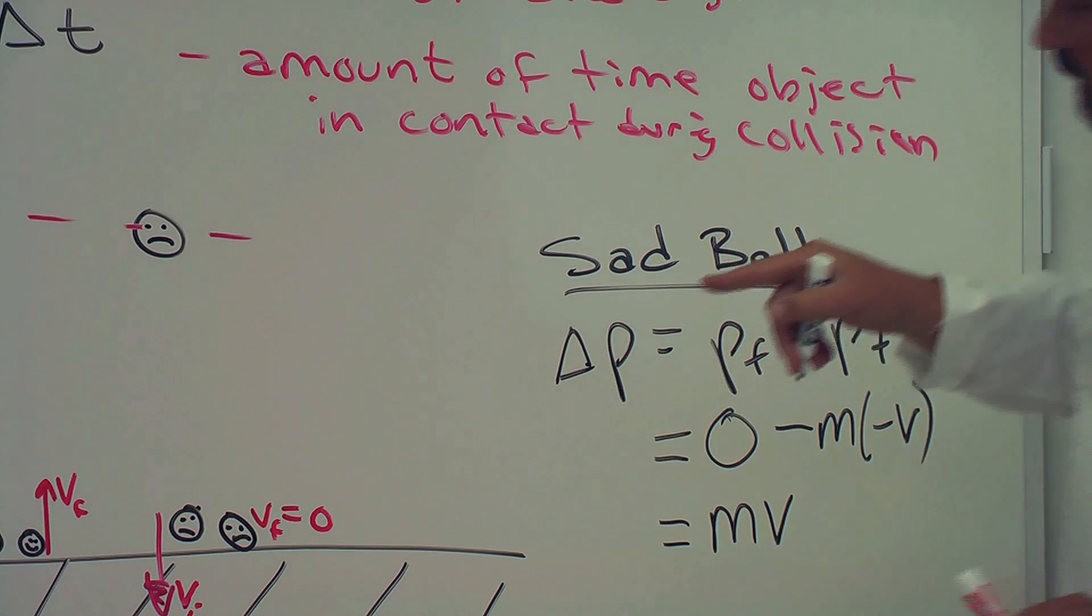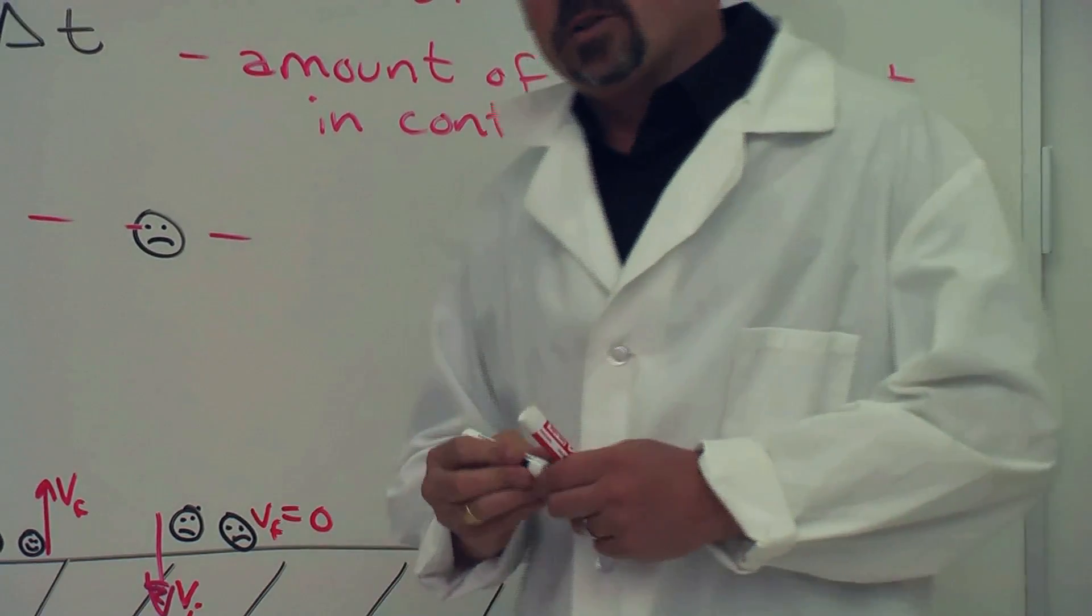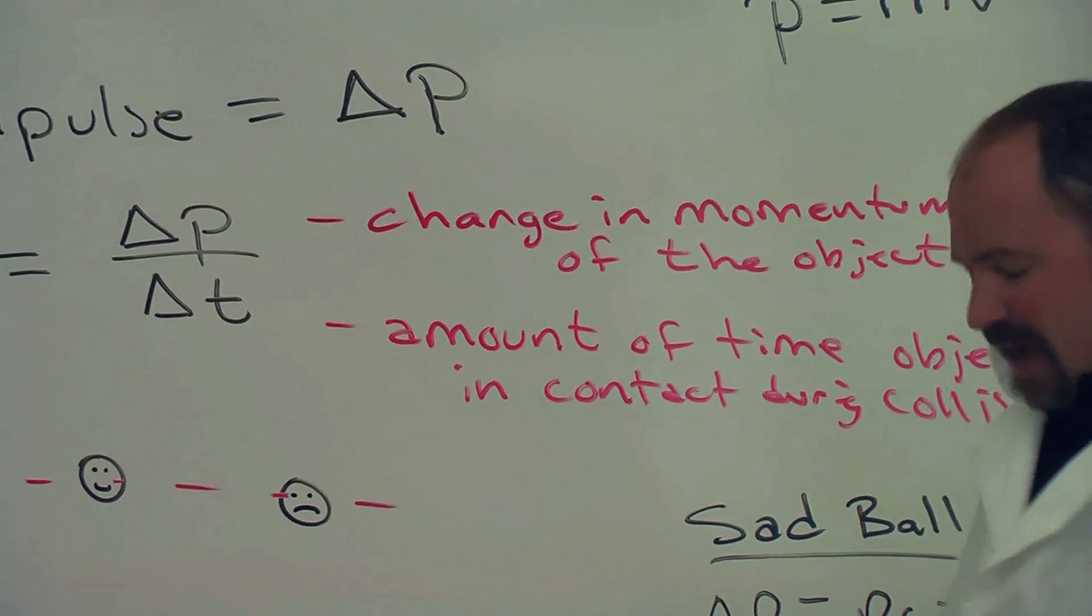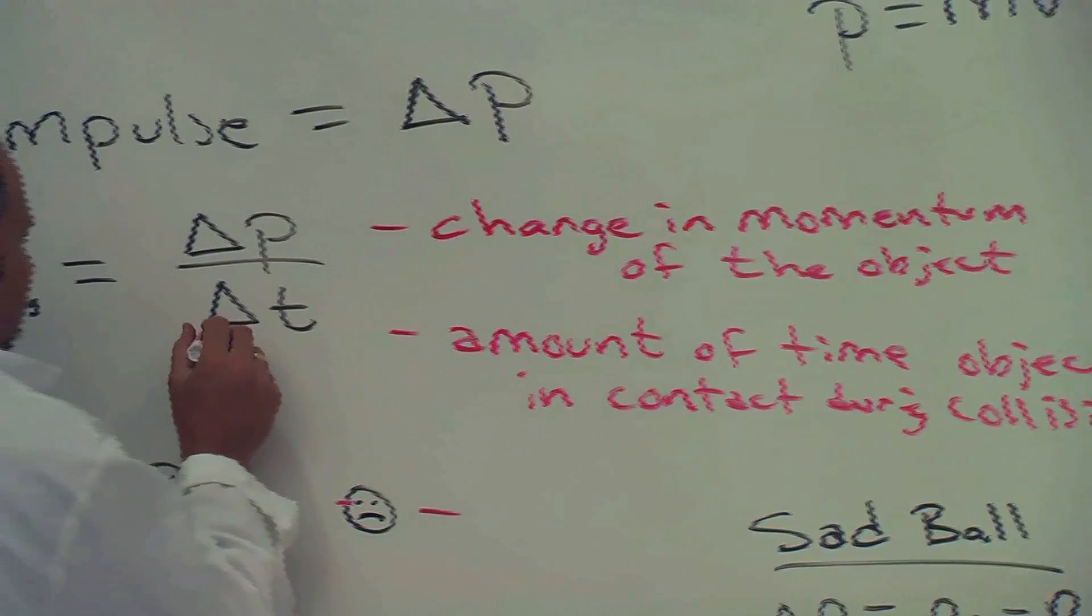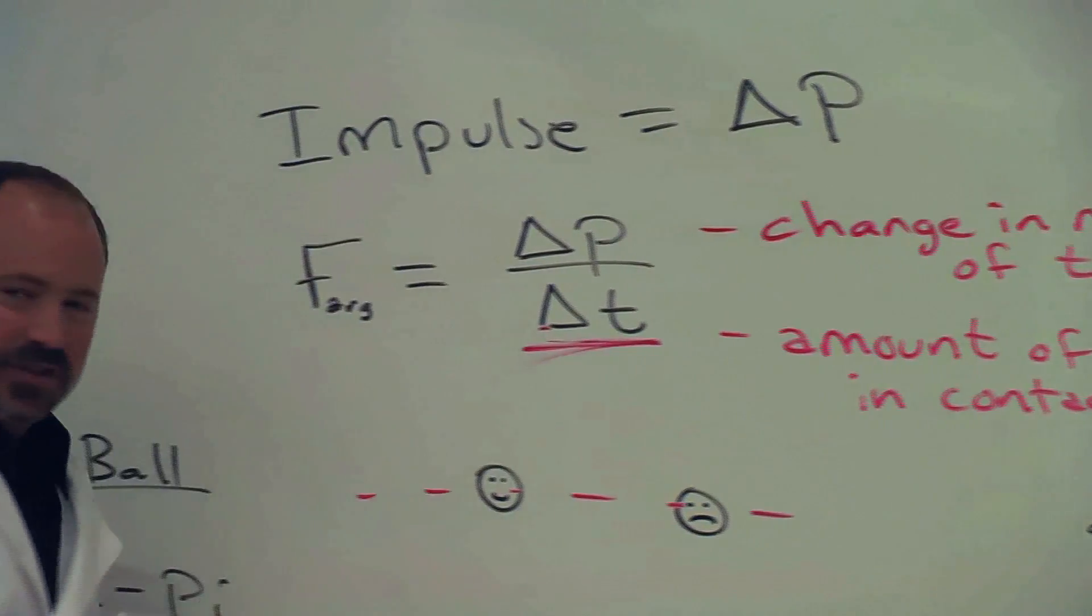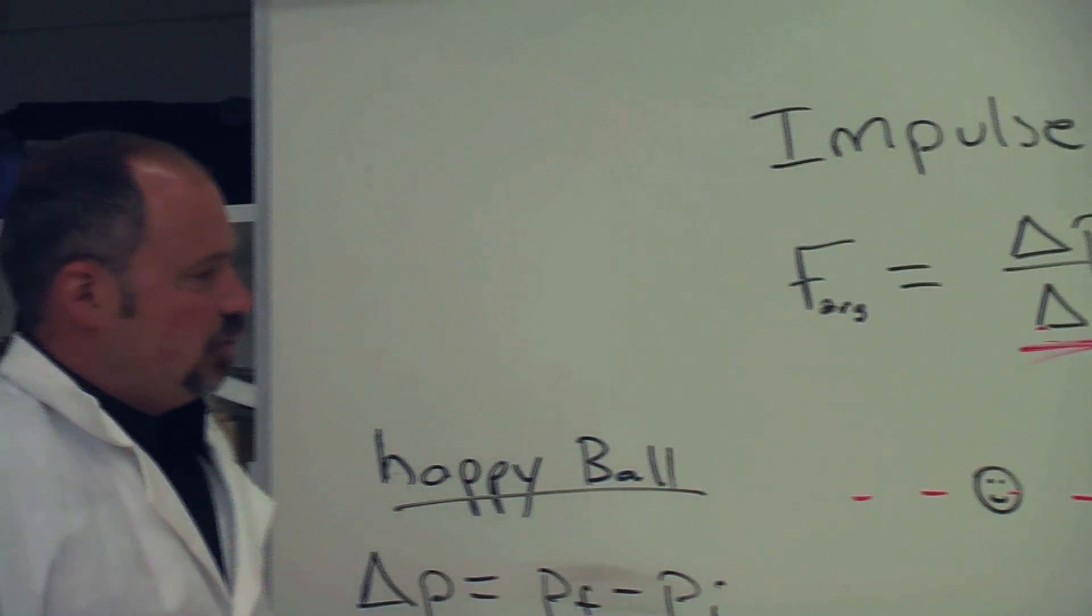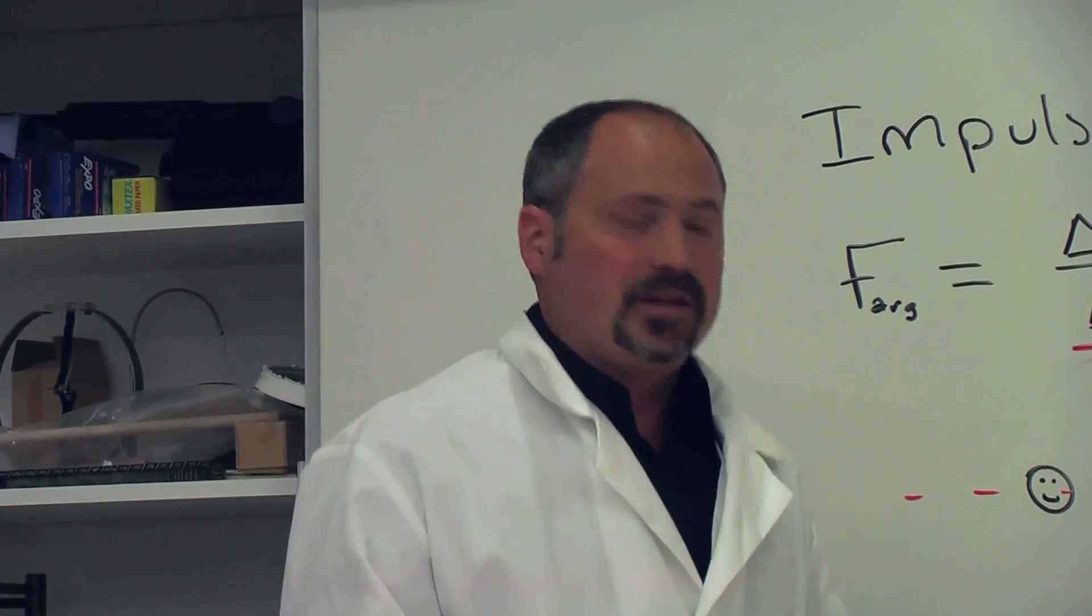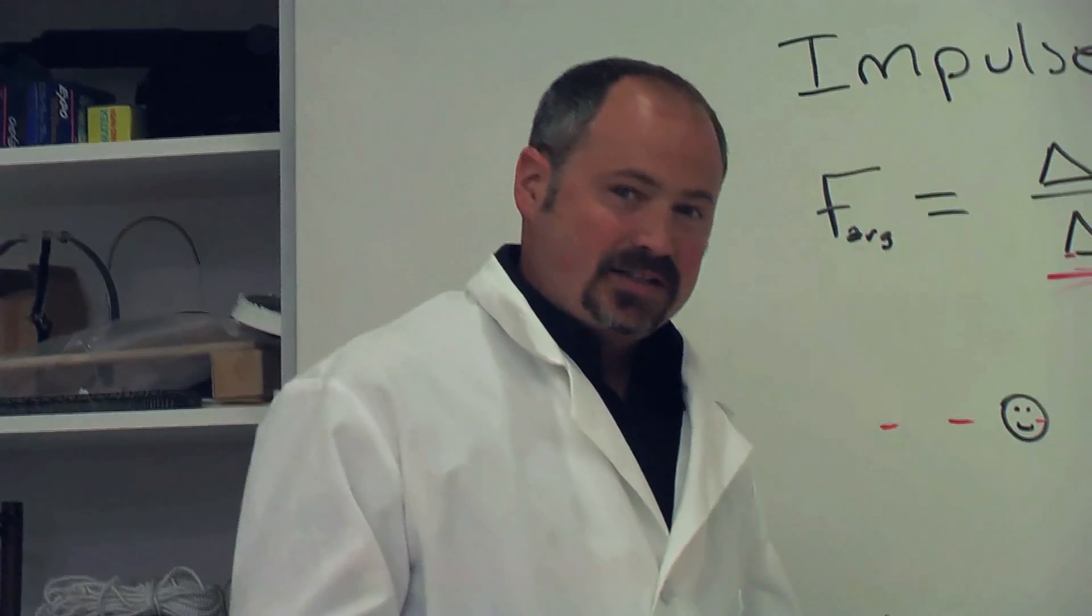So the happy ball imparts twice the impulse on the table as the sad ball. And assuming that the contact time is the same for both, it will also impart a greater force on the table than the sad ball.